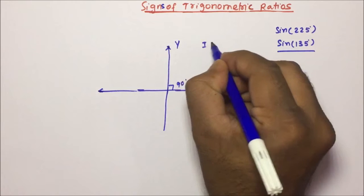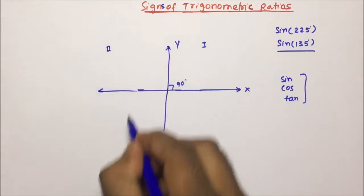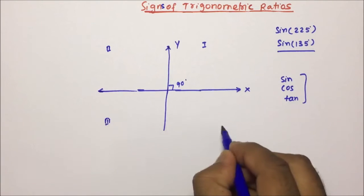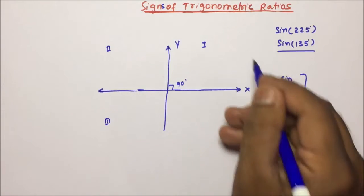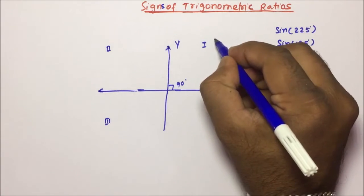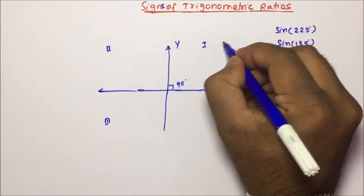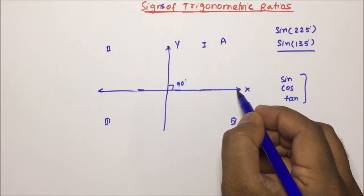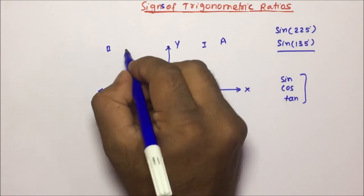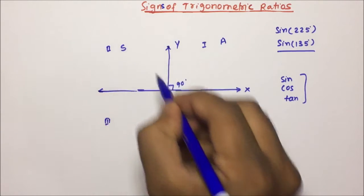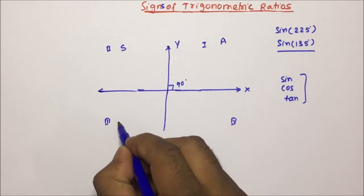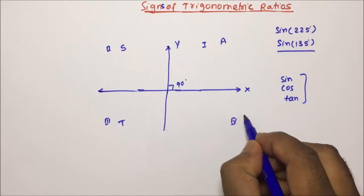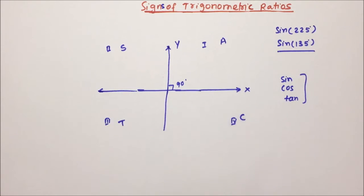This is the first quadrant, this is the second quadrant, this is the third quadrant, and this is the fourth quadrant. Generally, in the first quadrant all Trigonometric ratios will be positive. In the second quadrant only sine will be positive, in the third quadrant only tan will be positive, and in the fourth quadrant only cos will be positive.